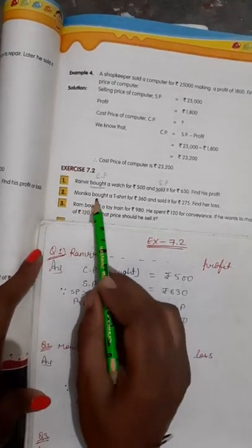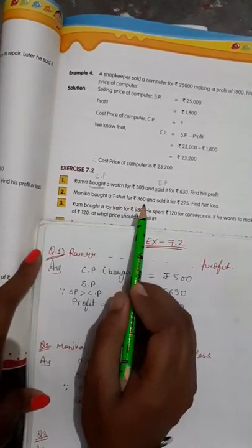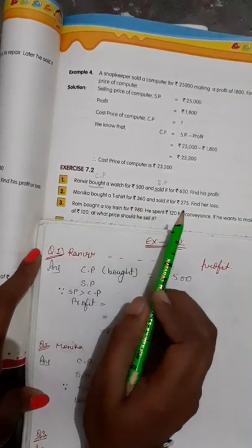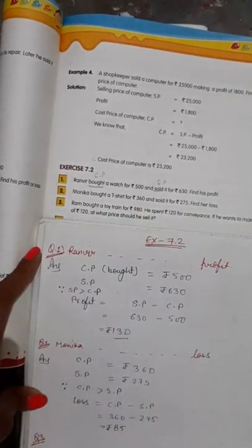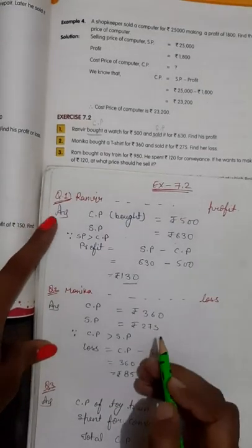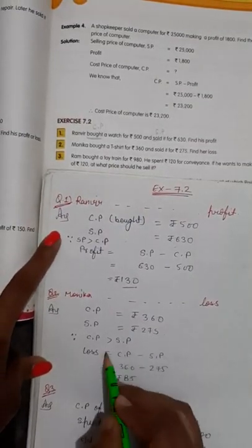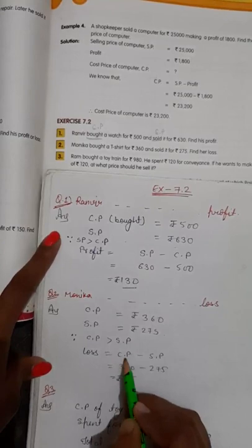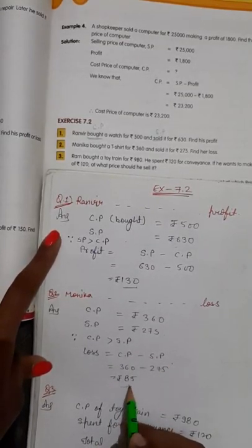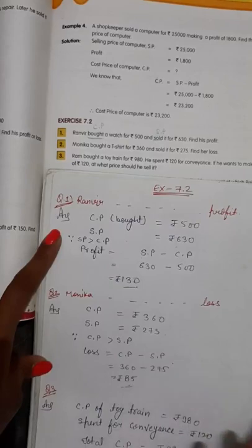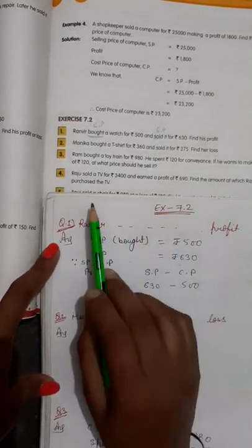Next: Monica bought a t-shirt for 360. 'Bought' means CP is given and 'sold' means SP is given. Find her loss. Cost price is greater than SP, so there is a loss. Using the loss formula CP minus SP, you get a loss of 85 rupees for Monica.